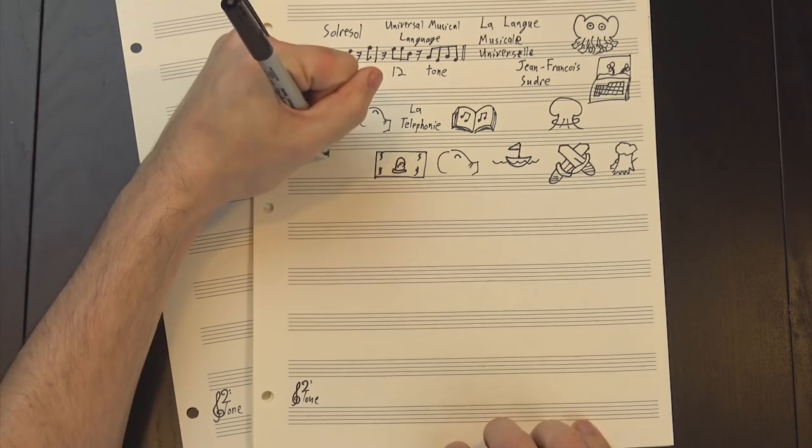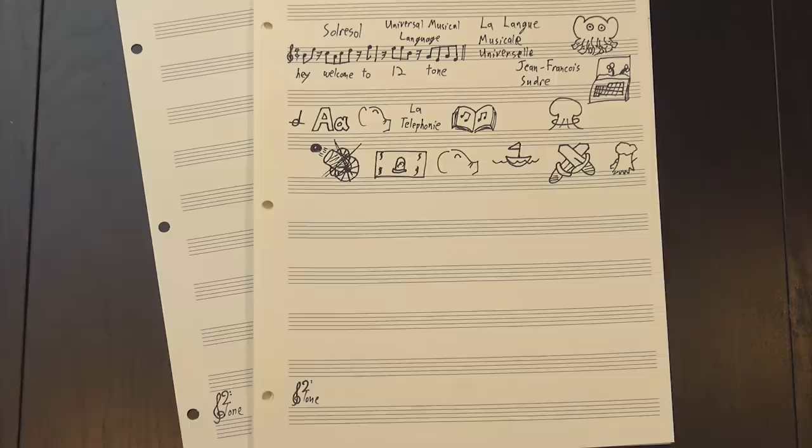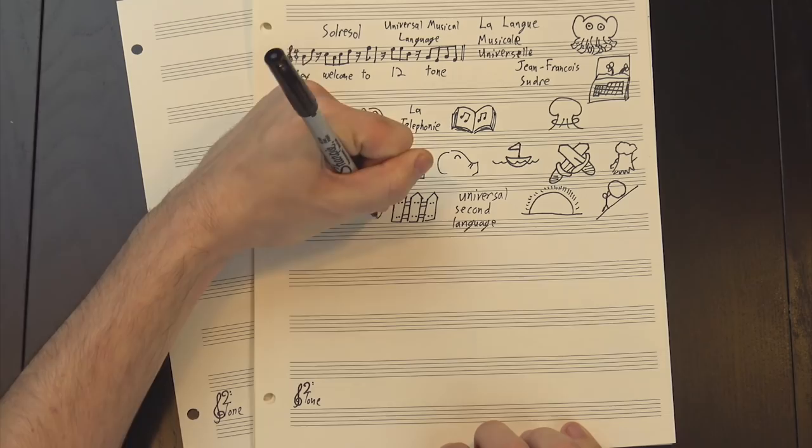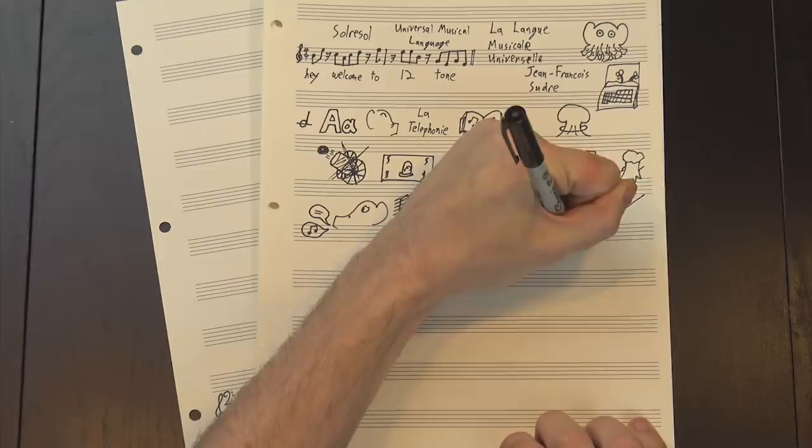Instead, he set his sight on an even more ambitious task, a universal second language. His goal was to create a language that was bound to no particular country, one that every person learned in addition to their native tongue, allowing free communication across cultural borders. But just converting French into a musical code wasn't good enough for that. Soudre was going to have to invent a real language.